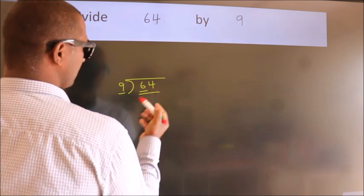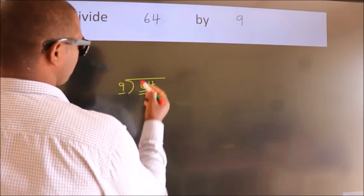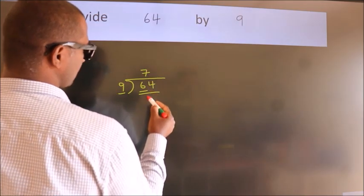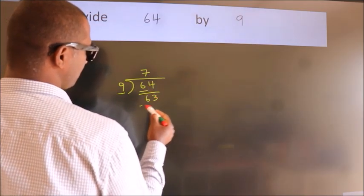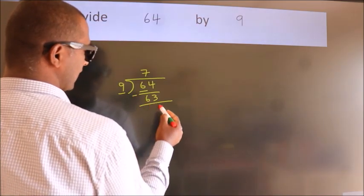64. A number close to 64 in the 9 table is 9 sevens, 63. Now we should subtract. We get 1.